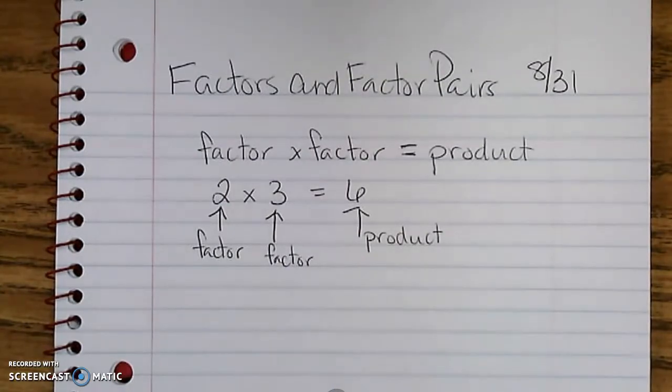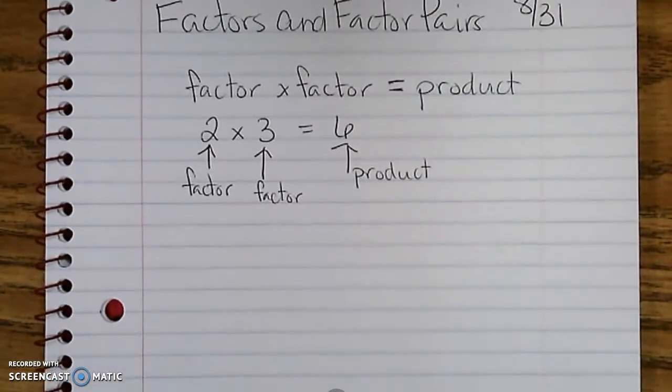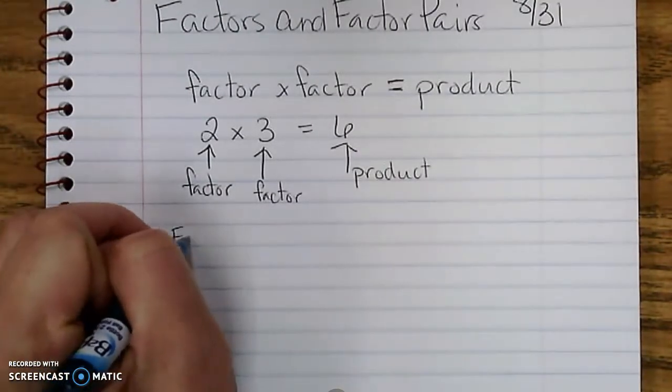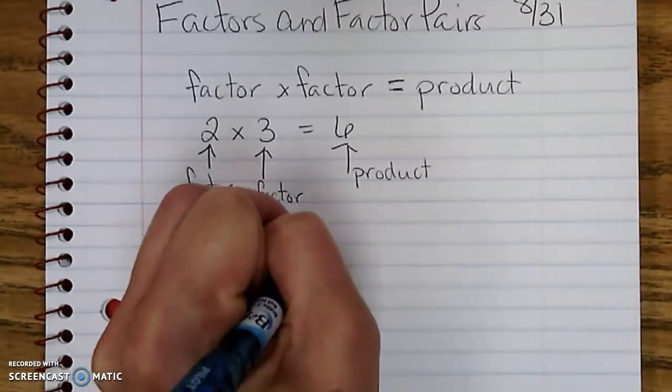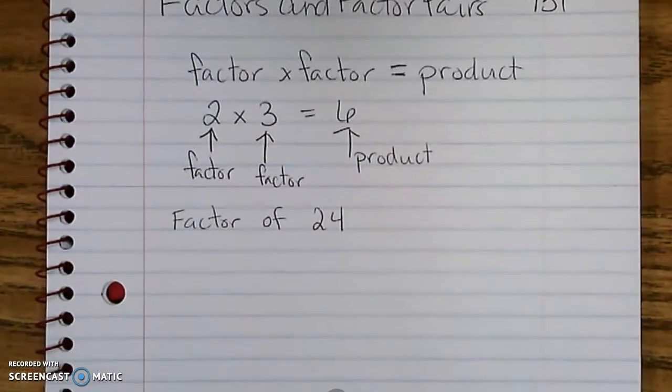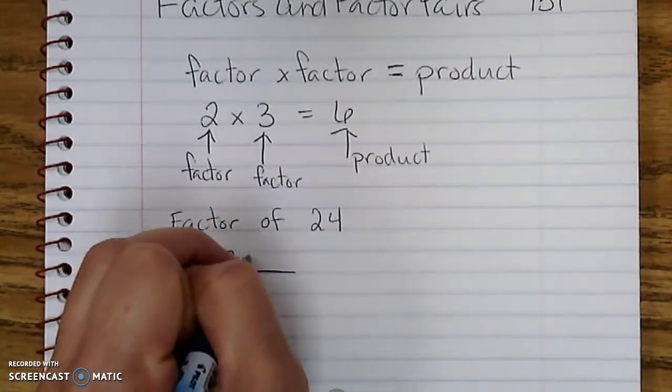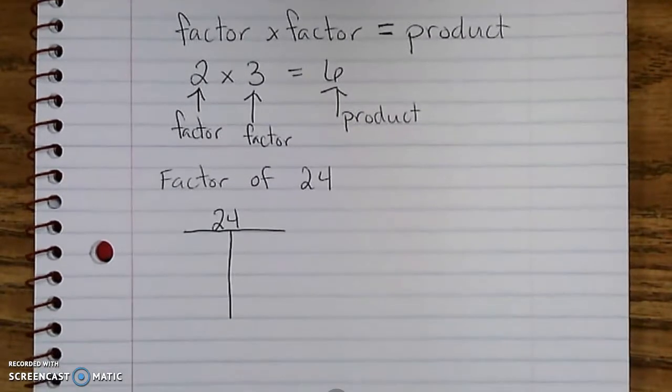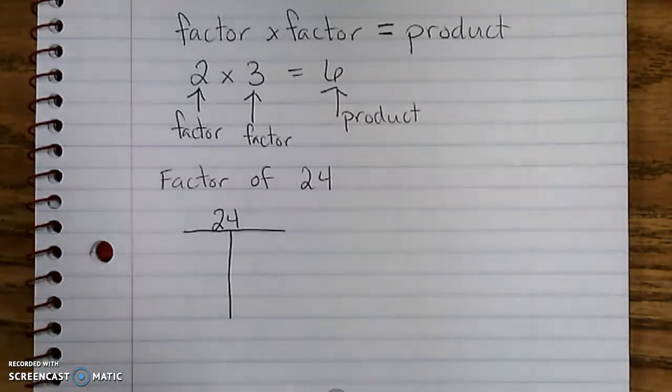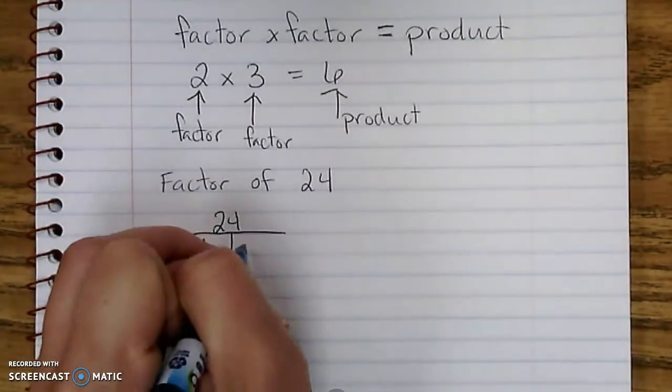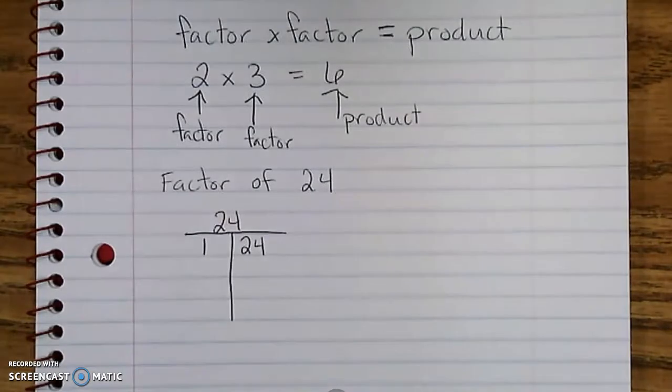For our lessons coming up in chapter 2, you have to be able to find the factors of a number. Let's start by finding the factors of 24. One way to do this is to make a t-chart. I'm going to put 24 at the top because those are the factors we are finding, and I find it easiest to start at the bottom. Every number has a factor of 1 and itself, so one factor pair is 1 and 24.